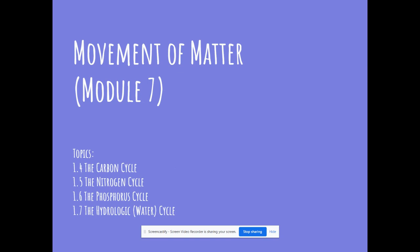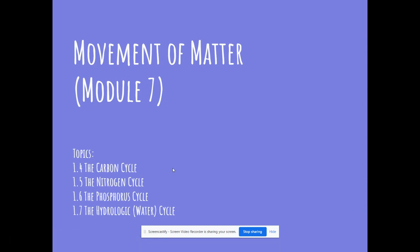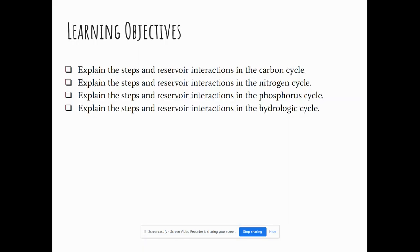Moving on to the next big topic — the movement of matter. This mostly comes from Module 7 in your textbook. Be familiar with the carbon cycle, nitrogen cycle, phosphorus cycle, and the water cycle. This also corresponds with your GoFormative.com assignment for the week. You should be able to explain the steps and the main reservoir interactions with each cycle — for example, where we get carbon or nitrogen, how it moves, whether it moves through air or rocks, and how that matter moves through different ecosystems.